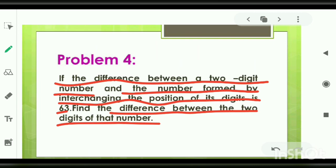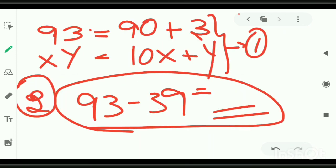The difference between a two-digit number and the number formed by interchanging the position of its digit is 63. So, it is given in the question, x, y minus y, x is equal to 63.